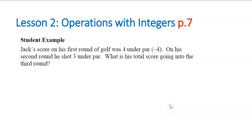So if we look at this first student example, it's a golf example, and in golf it's actually a good thing to have negative scores. Jack's score on his first round of golf was 4 under par, so he's playing quite well, so that's a negative 4. On his second round he shot 3 under par, so we add on to the first round the second round, which is a 3 under par. So what's his total score going into the third round? Well, we see that we're adding two negative integers, so we just add them. 4 plus 3 is 7, and because they're both negative, we have a negative 7 score.